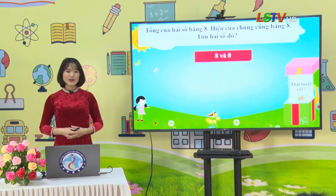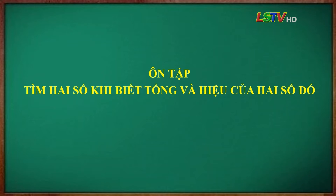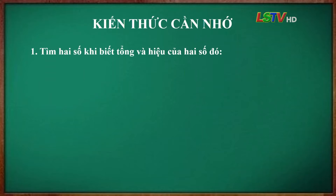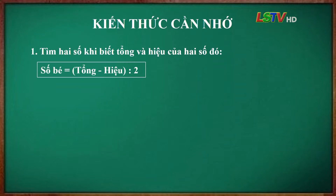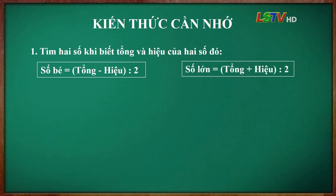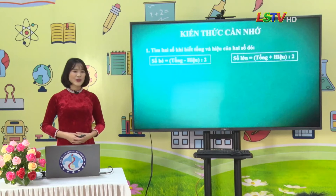Tiếp theo, cô mời các em đến với nội dung của bài học ngày hôm nay: Ôn tập tìm 2 số khi biết tổng và hiệu của 2 số đó. Thưa cô, muốn tìm 2 số khi biết tổng và hiệu, em áp dụng công thức: số bé bằng (tổng trừ hiệu) chia 2, số lớn bằng (tổng cộng hiệu) chia 2. Em trả lời đúng rồi. Cô khen em.